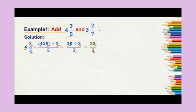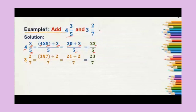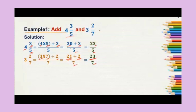Now we will convert the second mixed fraction into an improper fraction. The whole number is 3, the denominator is 7, and the numerator is 2. So 3 times 7 is 21, plus the remainder 2 gives us 23. The denominator remains the same, that is 7. So 3 2/7 becomes 23/7. We have now converted both mixed fractions: 23/5 and 23/7.